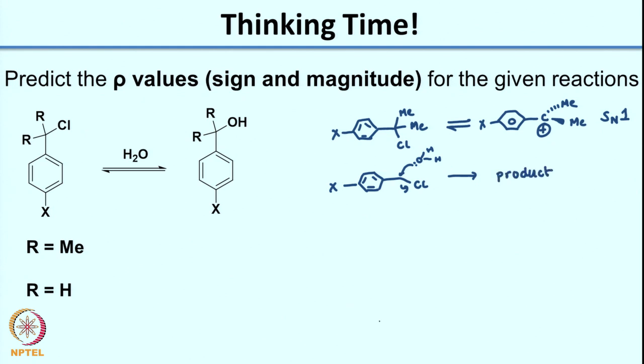If we look at the transition state for the SN2 case, it would show a partial charge buildup at the carbon next to the aromatic ring.